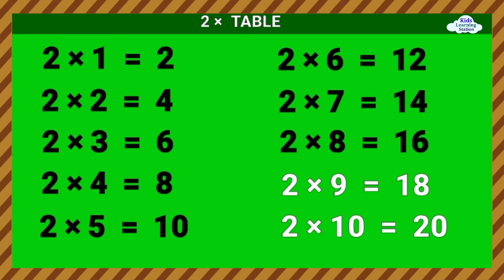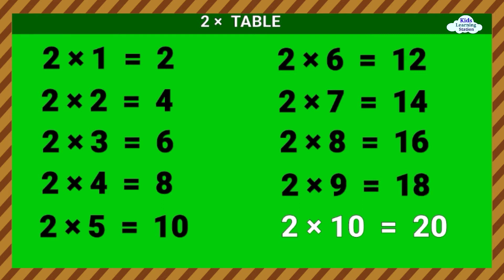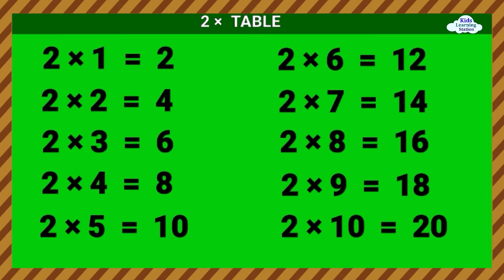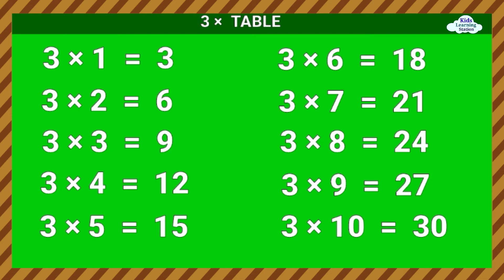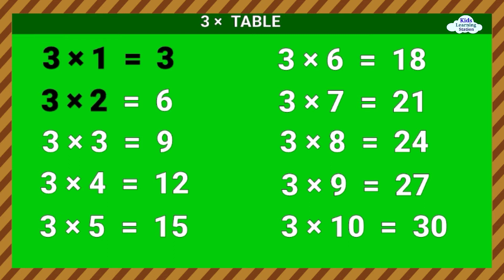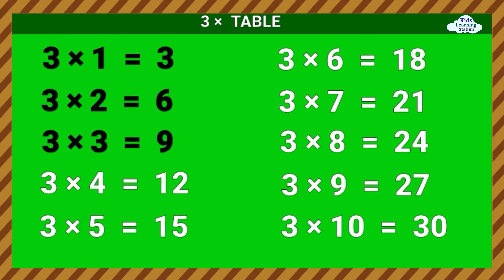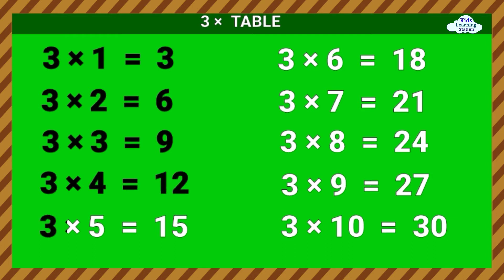2 times 5 equals 10. 2 times 6 equals 12. 2 times 7 equals 14. 2 times 8 equals 16. 2 times 9 equals 18. 2 times 10 equals 20. Three Times Table. 3 times 1 equals 3. 3 times 2 equals 6.